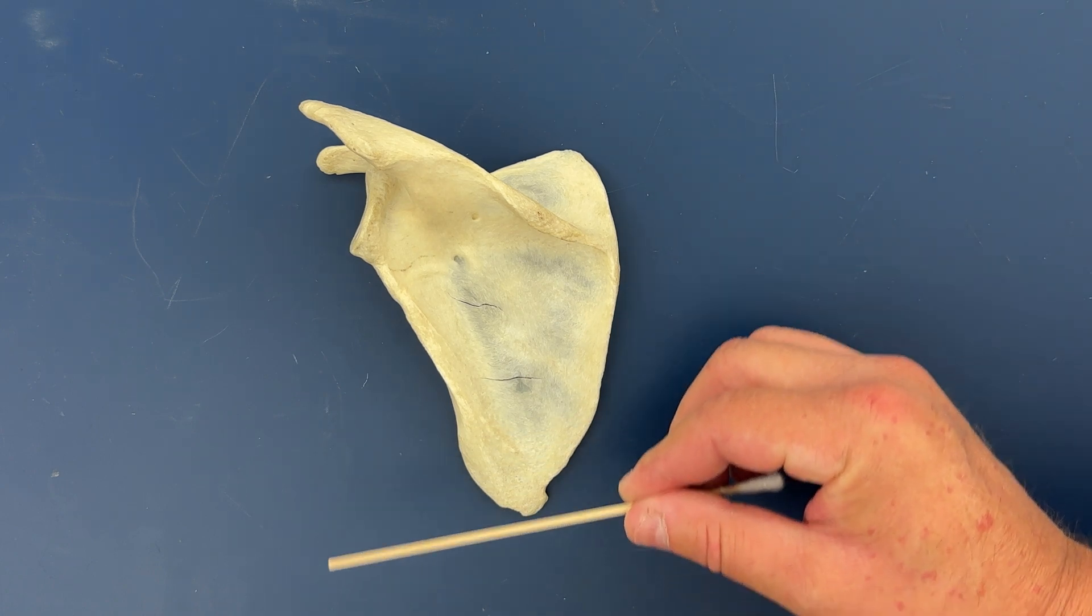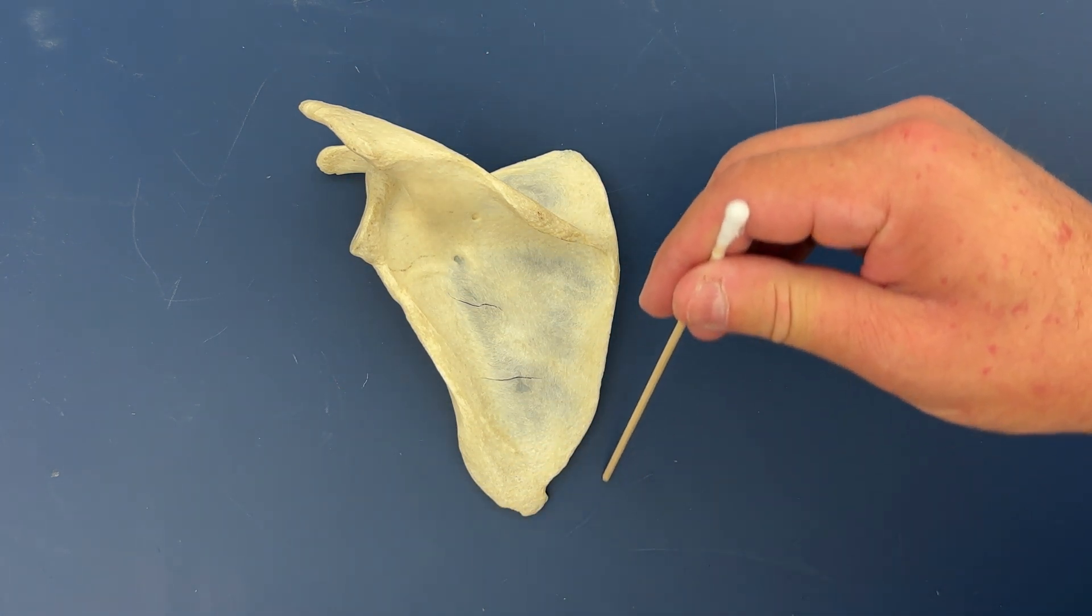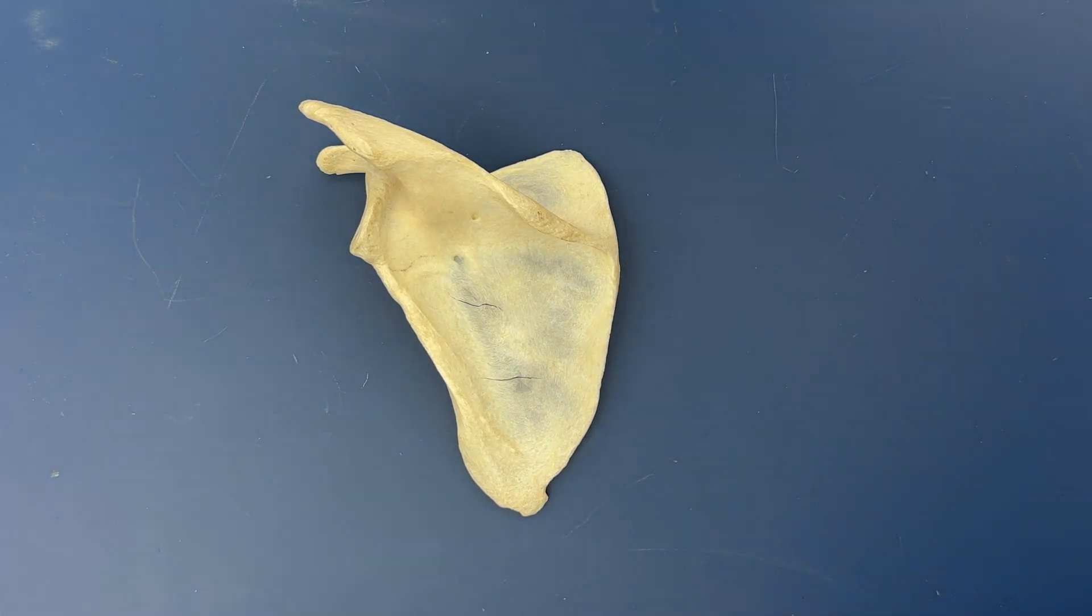This is the posterior view of the scapula. This is the medial side of the scapula and then this is the lateral side of the scapula.